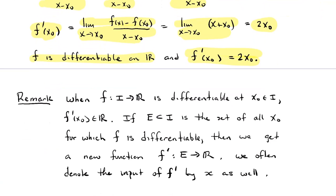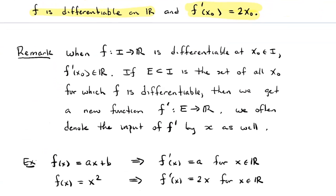I'm going to make just a quick remark that will maybe make this notation look a little bit more familiar. If you give me some function and it's differentiable at a point, then f prime of x₀ is a real number that depends on the point x₀. So if we define E to be the set of all x₀ in I for which f is differentiable, then we can think of f prime as a function on E. If you give me an element of E — that is, a point where f is differentiable — then f prime of x₀ is a real number. That's exactly what functions do. Think of this derivative f prime as a new function whose value at a point is the derivative of f at that point, and whose domain is the points for which f is differentiable.